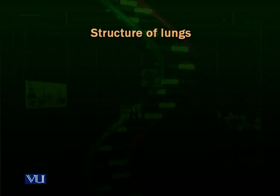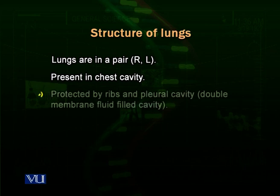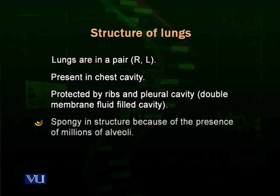The structure of lungs themselves — how the lungs look like. Lungs are in pair, one right and one left. These are present inside the chest cavity. These are supported and protected by the ribcage because lungs are spongy and they are delicate.